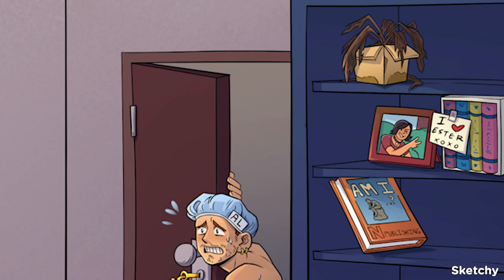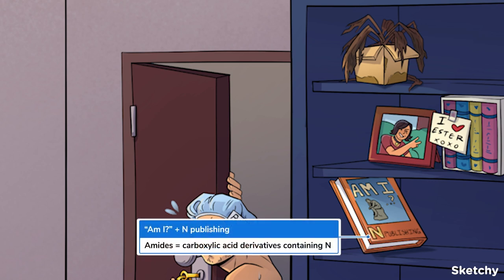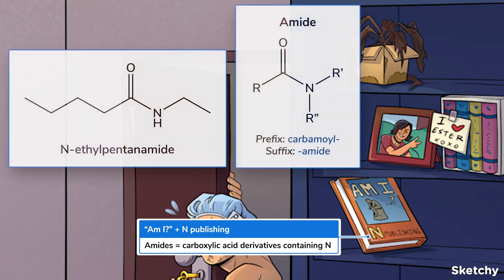First, let's take a look at this philosophy textbook that could surely trigger an existential crisis. Amides are named either with the carbamoyl or amido prefix, or the amide suffix. Similar to amines, we label any substituents attached to a nitrogen atom with a capital N in the molecule name. Did you notice the philosophy book was printed by N publishers?